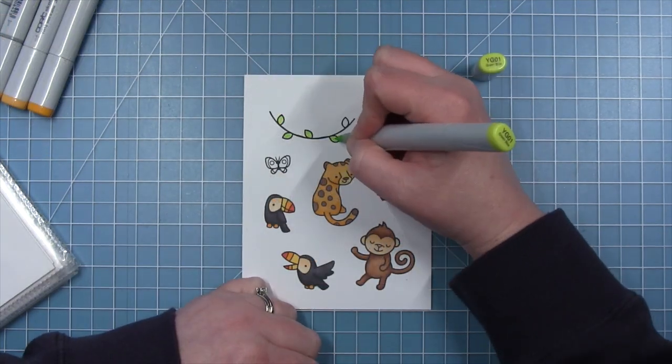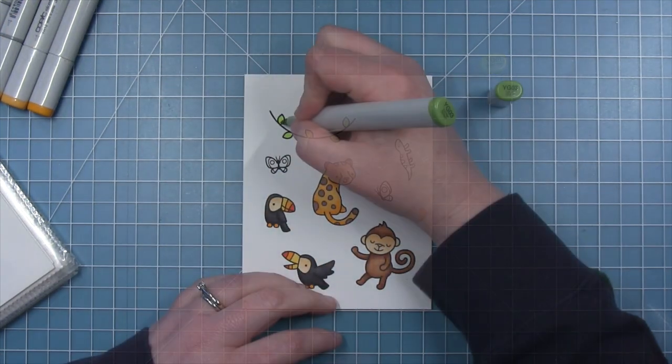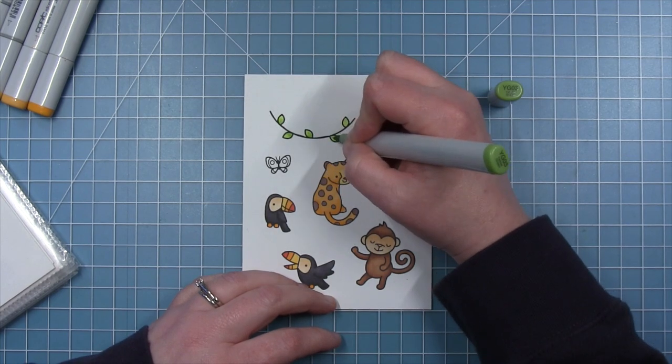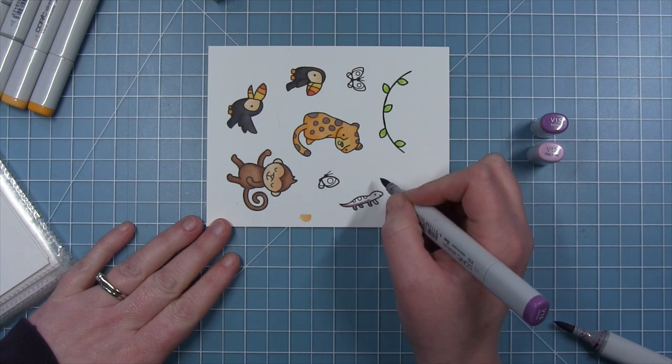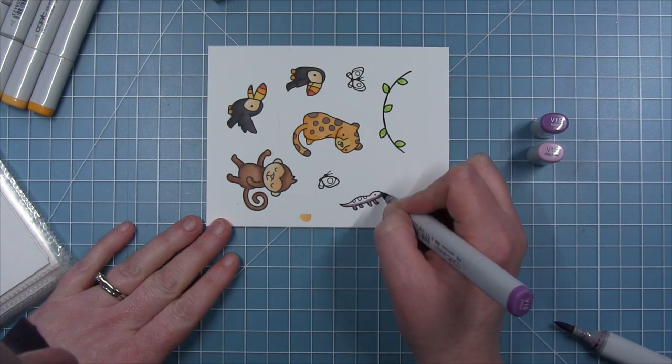Now moving on to that little vine, I did end up stamping a second one to use in my tree. And I also stamped some of the leaves from the Critters in the Jungle set to use as well. You'll see that here in a little bit.